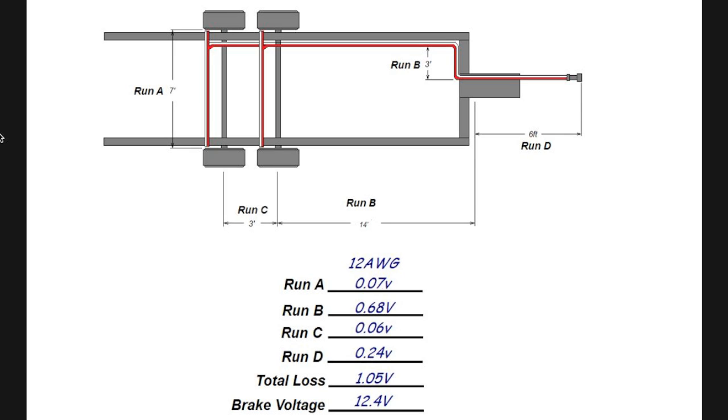And lastly, we do run C. Now run C is 6 amps, because as you can see, we only run to the rear two brakes. And when we add everything up, we have a total loss with using 12 gauge for the entire system of 1.05 volts, which should theoretically give us a brake voltage of 12.4 volts. So in this situation, the 12-gauge wiring should be sufficient.